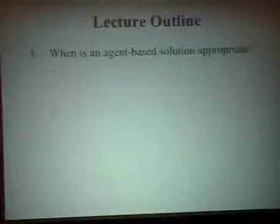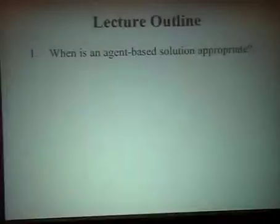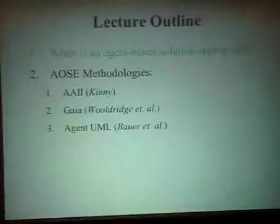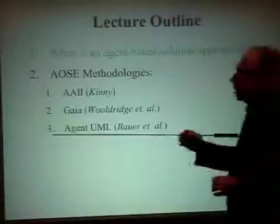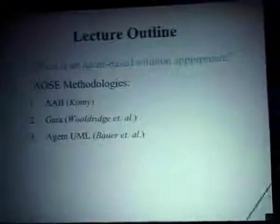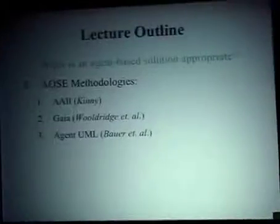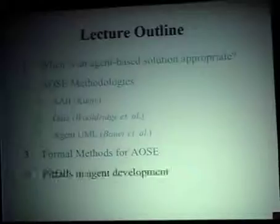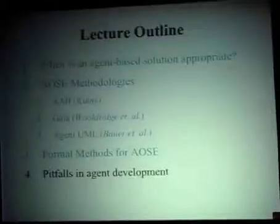Today we consider approaches to engineering of multi-agent systems, but we start by considering where agent-based solutions are actually appropriate — because not in all systems is it necessary to use a multi-agent system approach; it can just be traditional system engineering. Then we consider three methodologies, putting more attention on Gaia and Agent-UML, and briefly considering the AAII methodology. We also very briefly consider the application of formal methods in agent-oriented software engineering, and then some pitfalls in agent development that you have to be aware of.